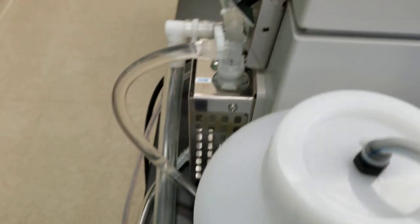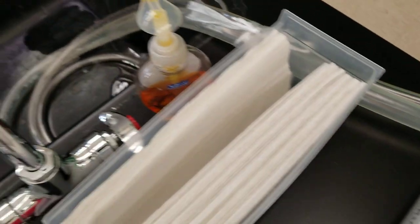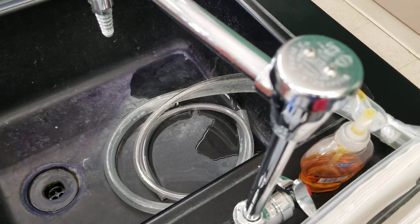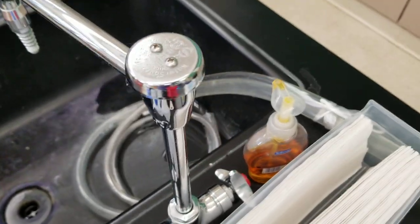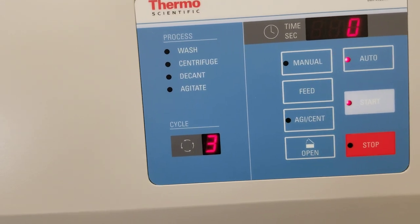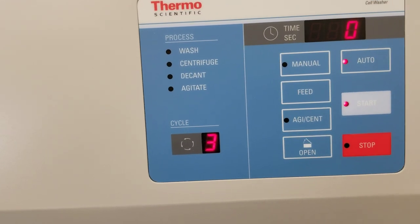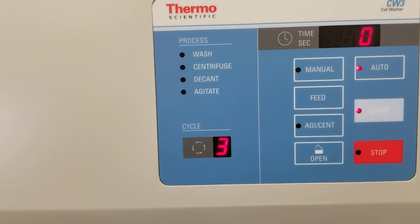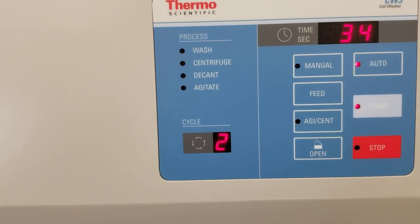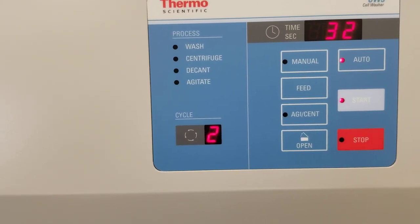You'll notice though, that the tubing also then goes out and to the sink. And depending on where you are in your cycles, that fluid will come out. So we just did one cycle of wash, then centrifuge and decant. That was the fluid going out. Then we agitated and now we're back to wash again. So that was the first cycle. So now we have two left.